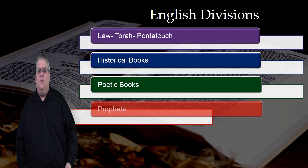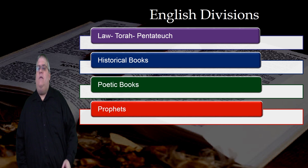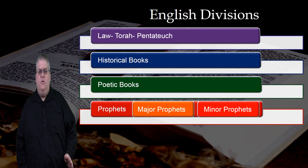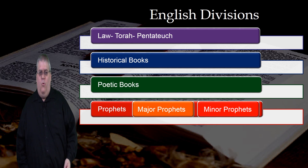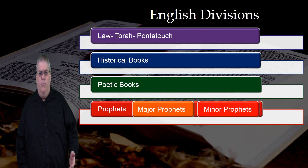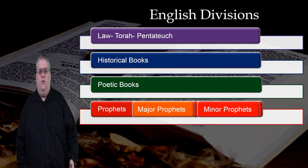And then the last division is the prophets. In the English Bible, the prophets are subdivided into two groups called the major prophets and the minor prophets. Don't let these terms confuse you — major and minor have nothing to do with their importance or influence, because every prophetic book is very important. The terms major and minor refer to the relative length of the books: major prophets are longer books, and minor prophets are shorter books.